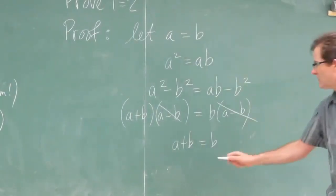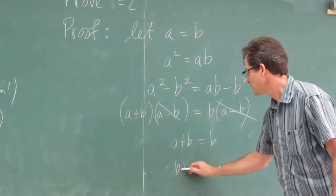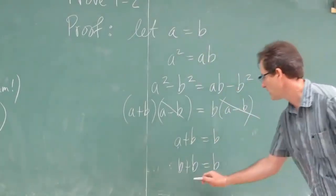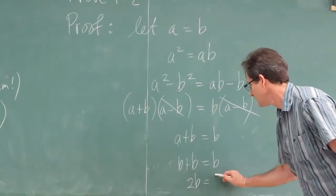But A is equal to B. So that's the same as B plus B equals B, because A is equal to B. Or 2B equals B.